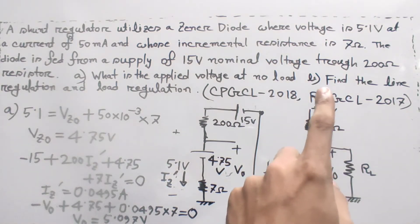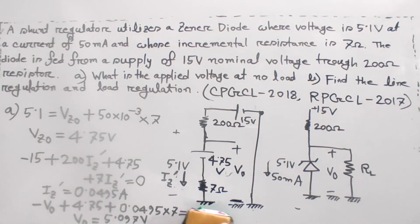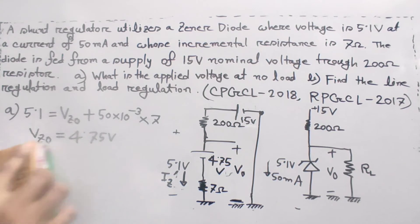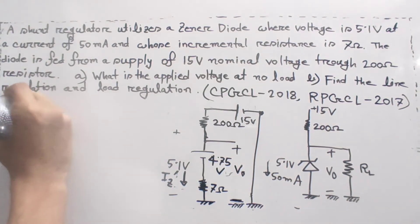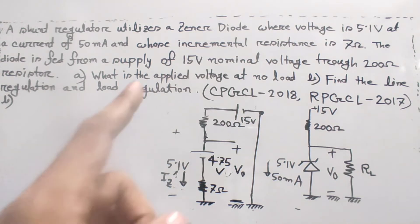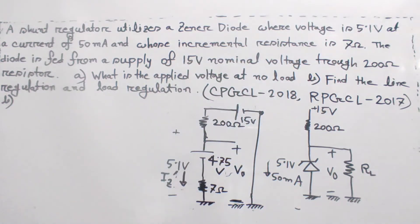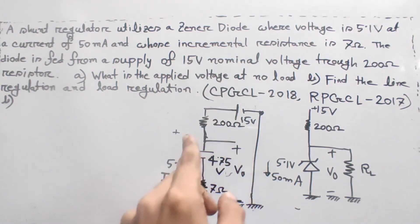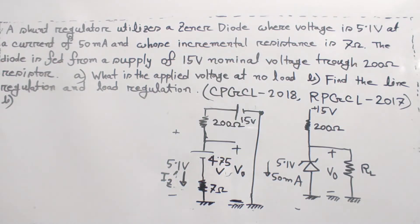Now for part two: find the line regulation and load regulation. These are advanced topics. Line regulation is determined at no-load condition — it tells how the output voltage changes with respect to changes in the supply (line) voltage, with load held constant at no-load.